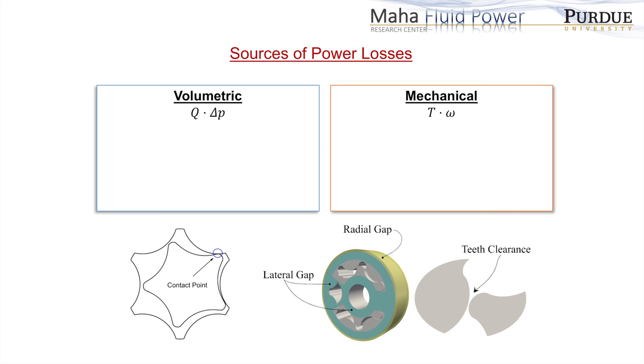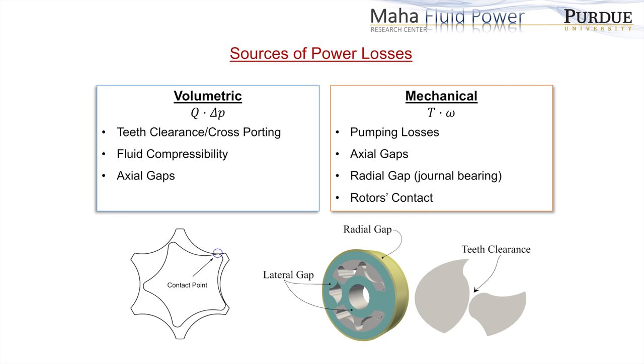Like any other kind of positive displacement machines, these units are subject to volumetric and mechanical losses, among which we can name teeth clearance and cross-porting, fluid compressibility and axial gap, pumping losses and friction in the lubricated interfaces and between the gears.